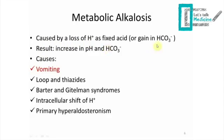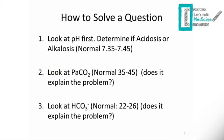Metabolic alkalosis is caused by a loss of hydrogen ions as fixed acid or a gain in bicarbonate, resulting in an increase in pH and bicarbonate. Vomiting is highlighted in red because it causes metabolic alkalosis, whereas diarrhea causes metabolic acidosis — keep that distinction in mind. Here are the rest of the causes of metabolic alkalosis.